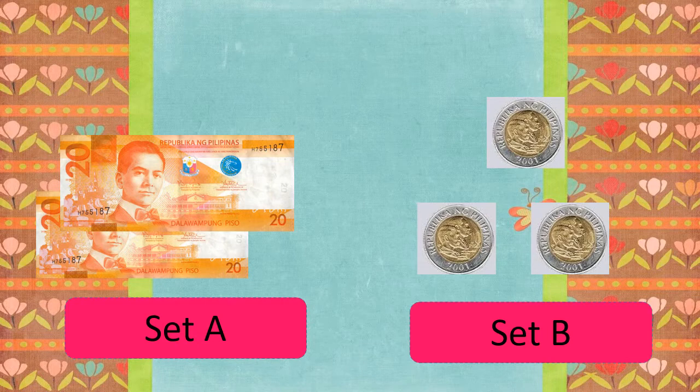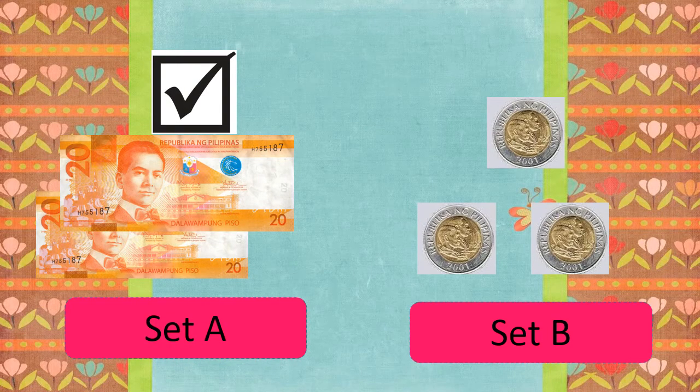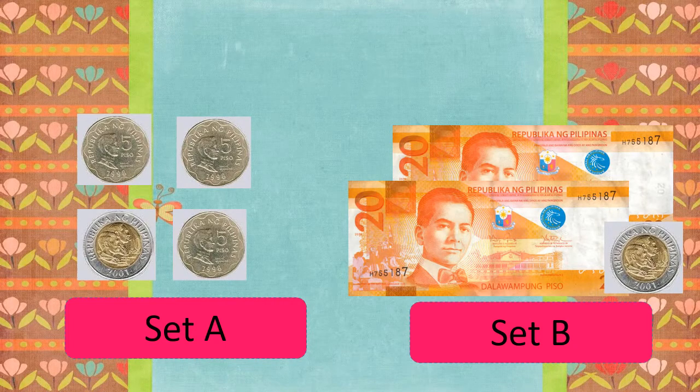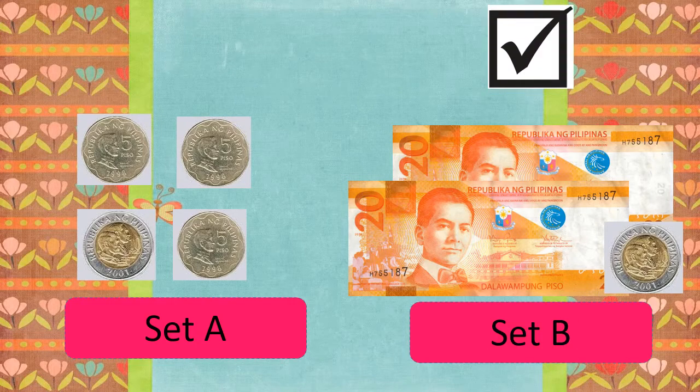Let's try to perform this activity. Let's try to count the amount of money in each set. Which set has greater amount? It's Set A. How about on these sets? Set A has 25 pesos. On Set B, we have 50 pesos. Which set is greater? It's Set B.